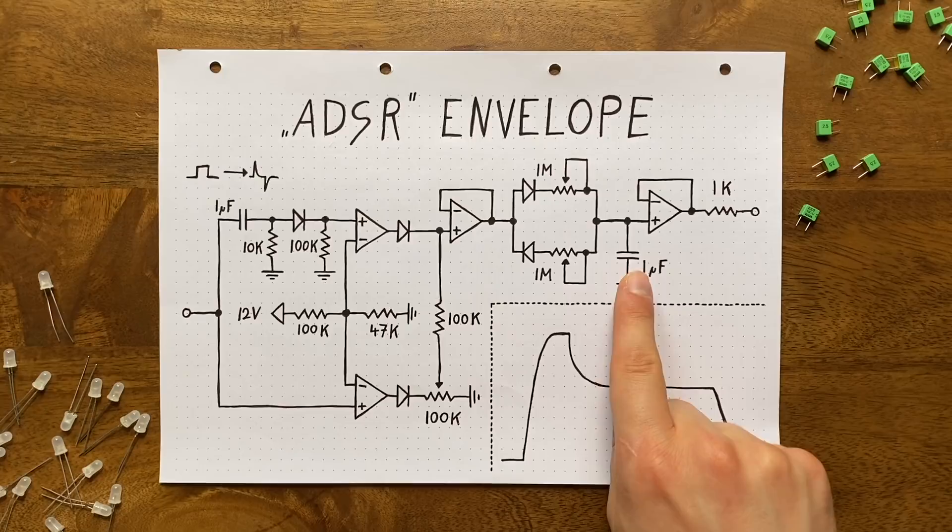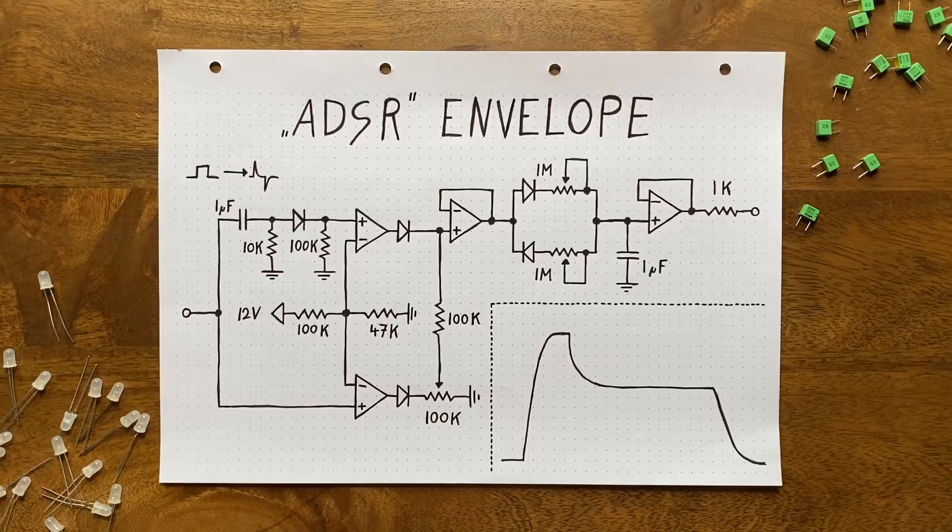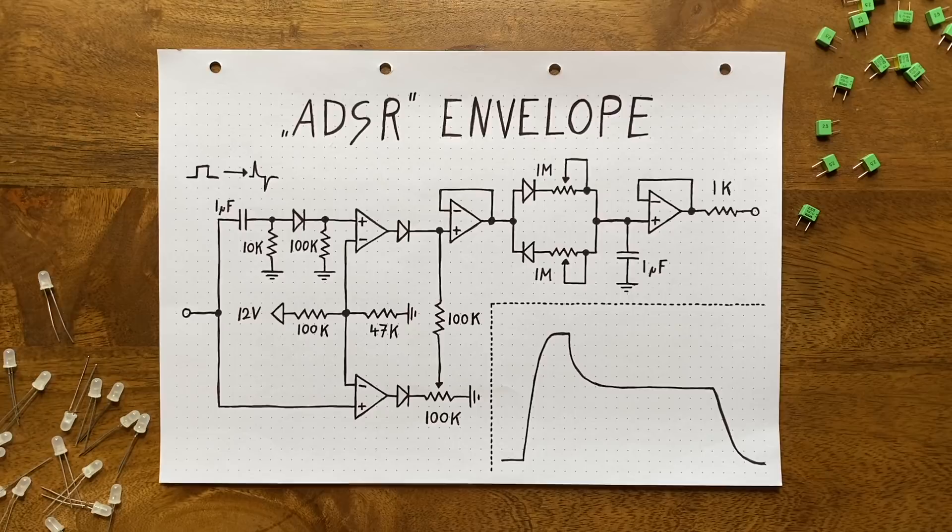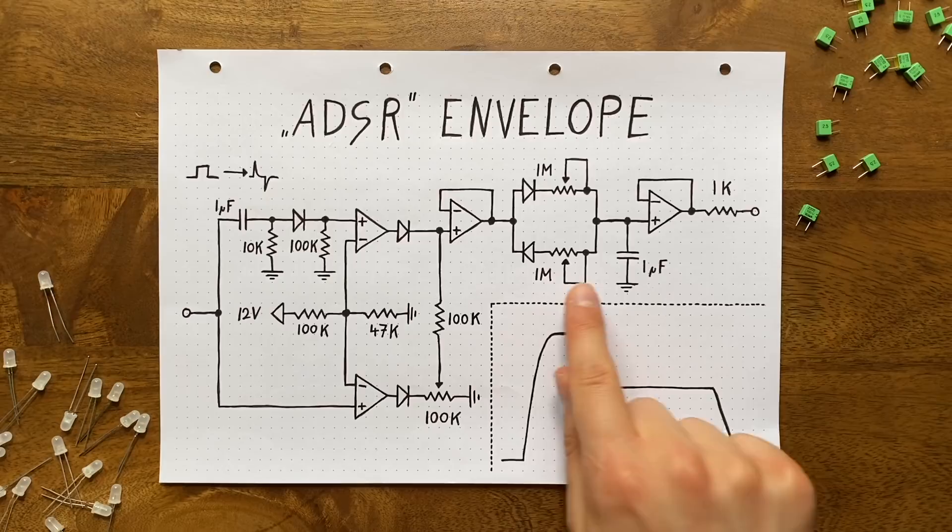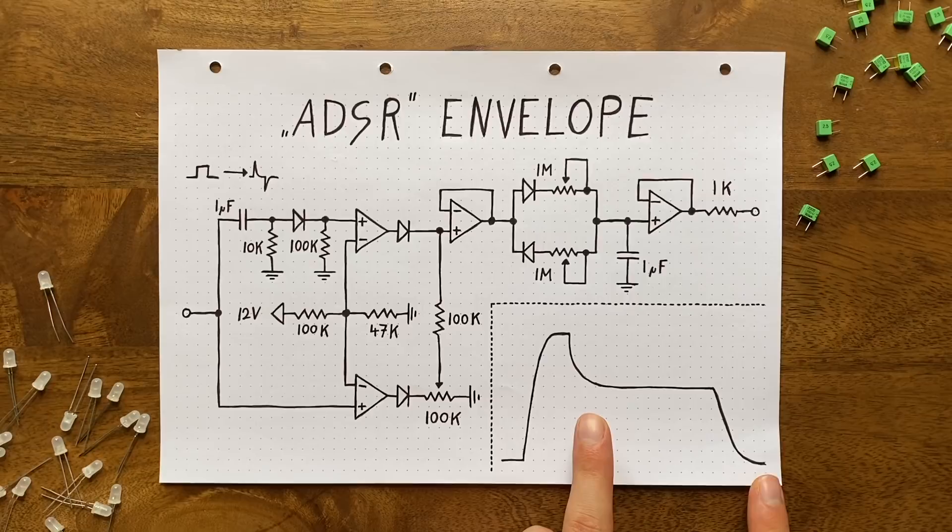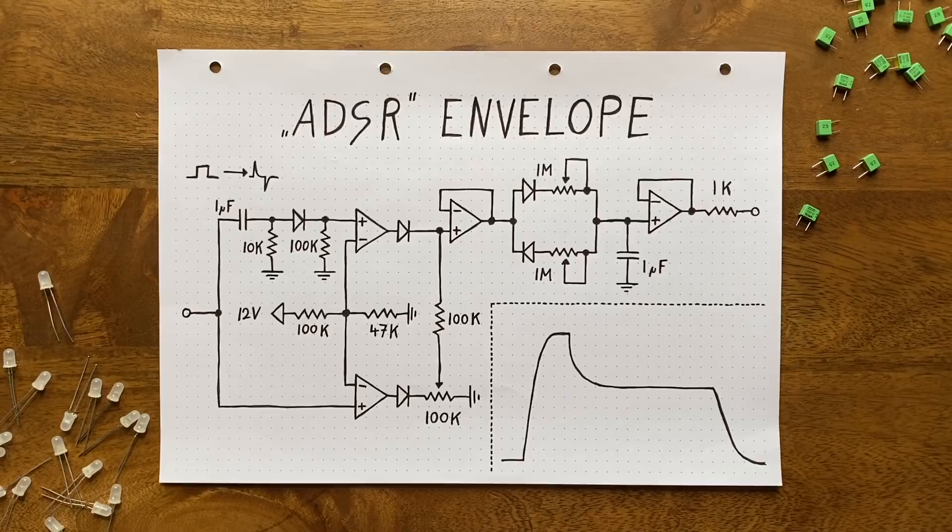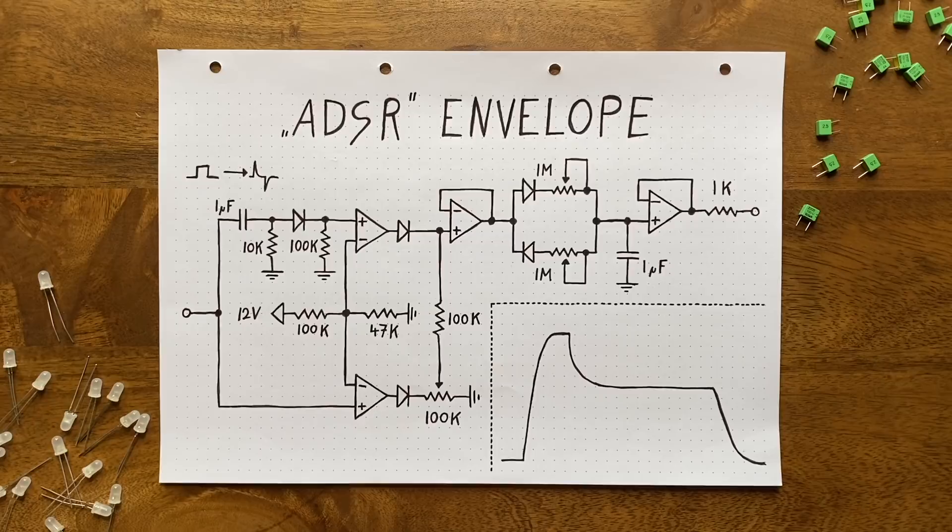The result is an output curve with four distinct phases: attack, decay, sustain, and release. Now as you might have noticed, there are two rather big caveats here. First, both in the decay and the release phase, the capacitor discharges through the same potentiometer. This means that you can't control those two phases individually. Changing one will also change the other. So we can never have a curve with a long decay and a super short release. Second, the decay phase is directly dependent on the set attack.